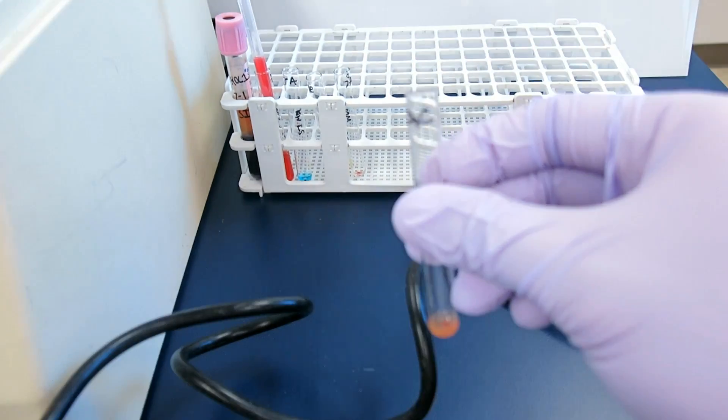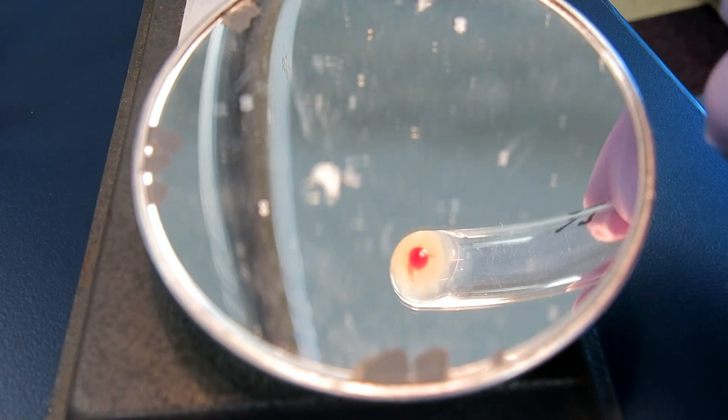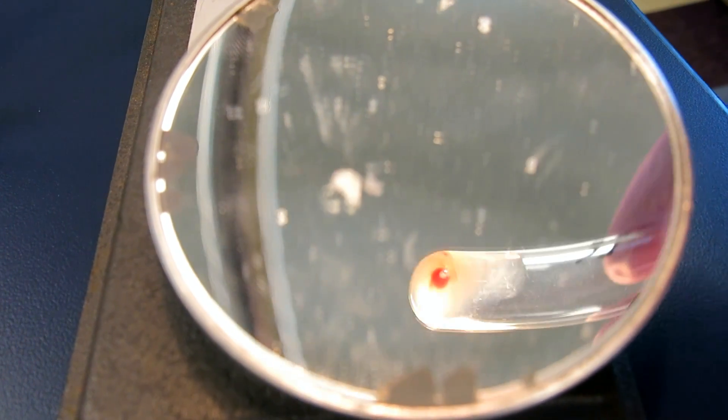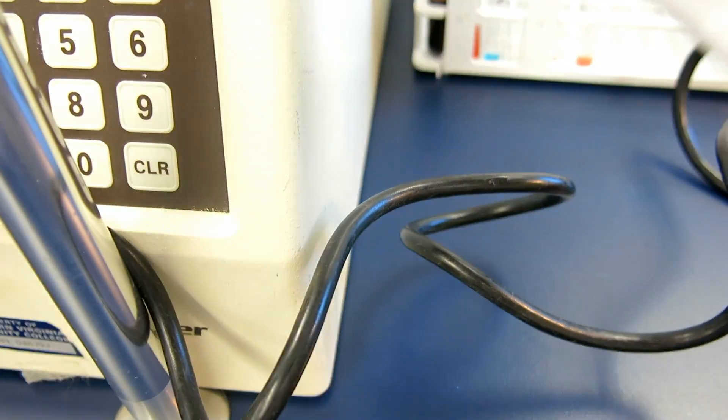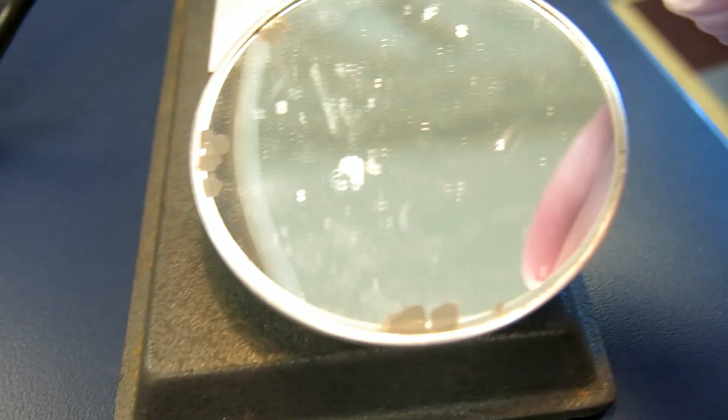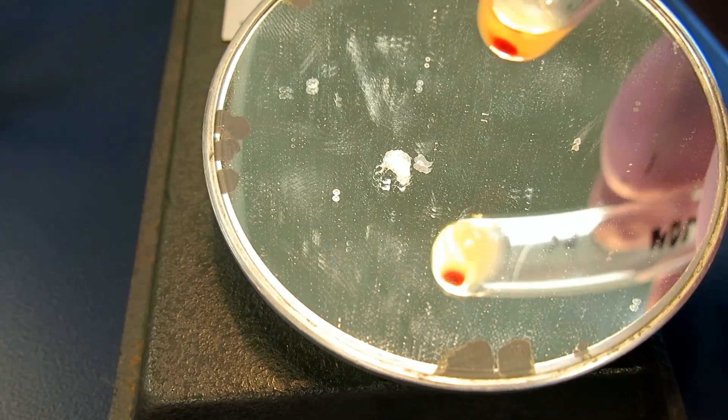Now let's take a look at the reverse group. In the reverse typing, we are testing the patient's serum or plasma against known blood types. This is done to confirm the blood type results taken from forward testing. There are no antibodies in the patient's plasma, so no agglutination is occurring.